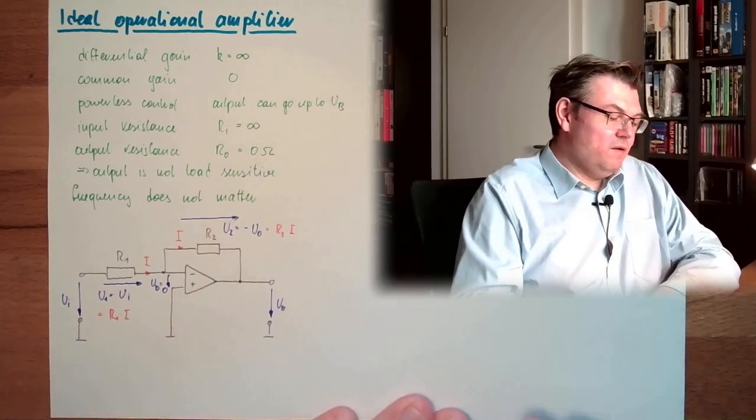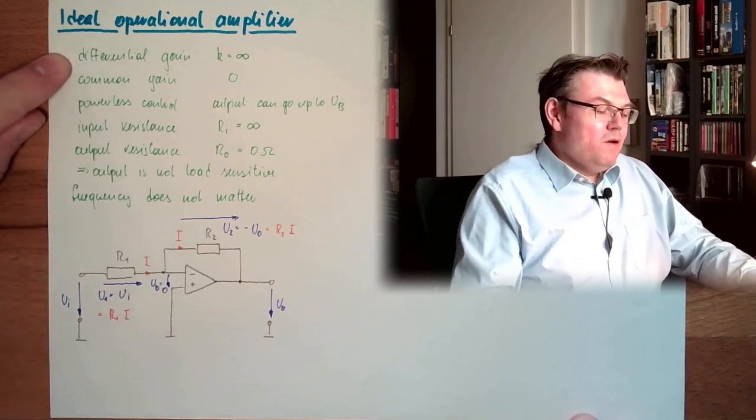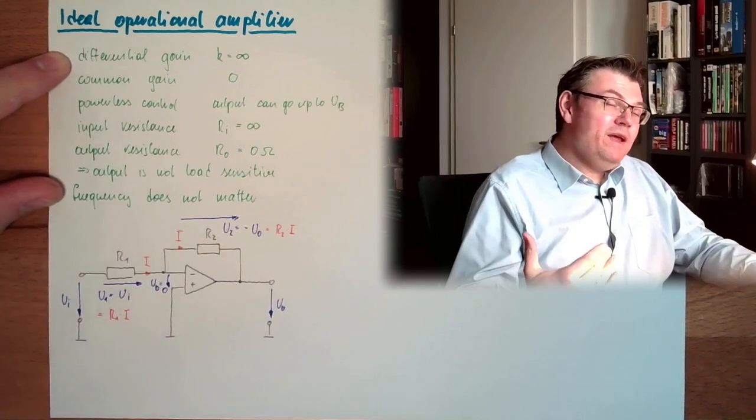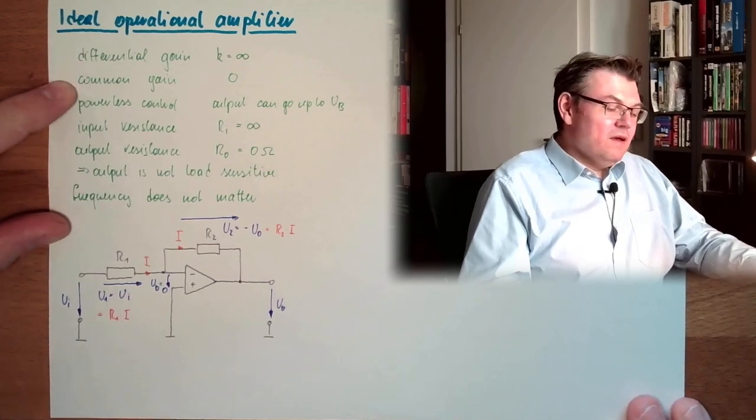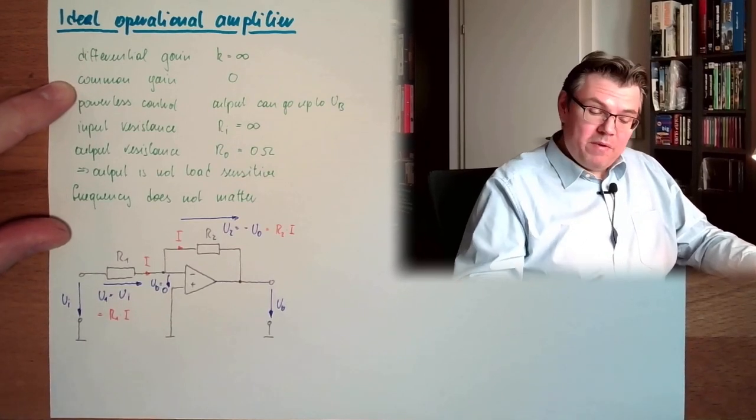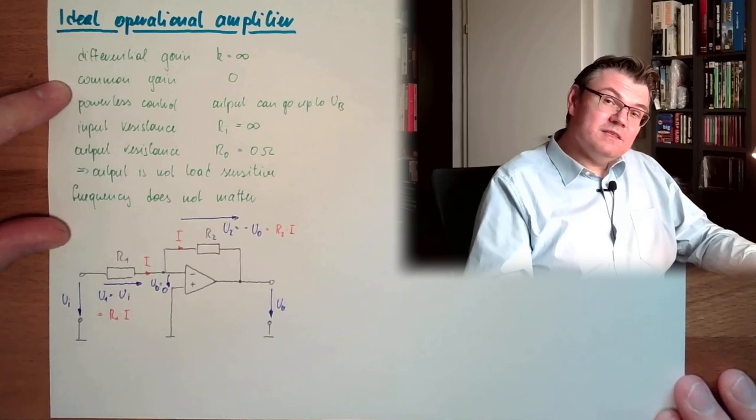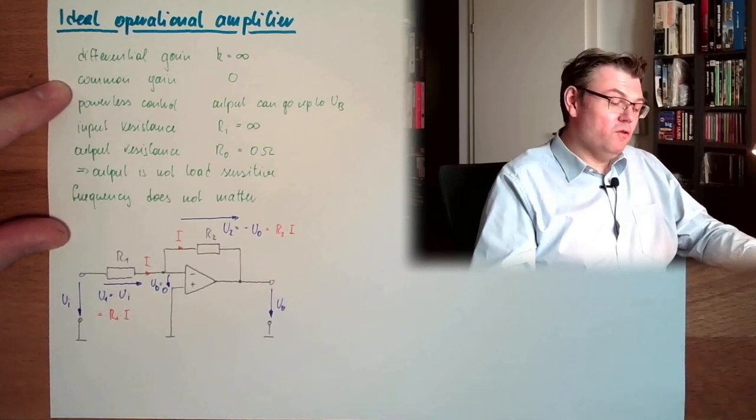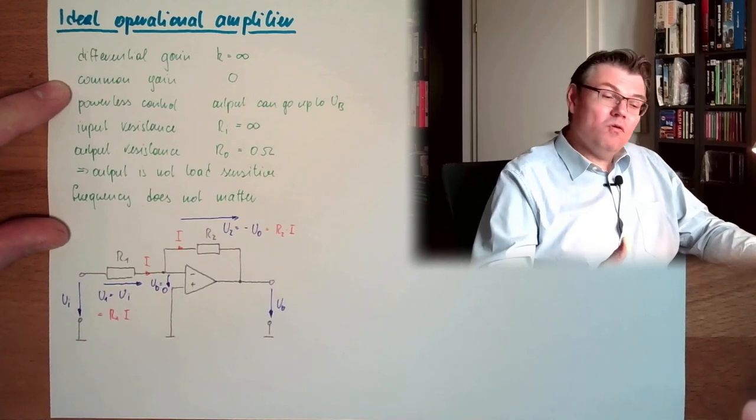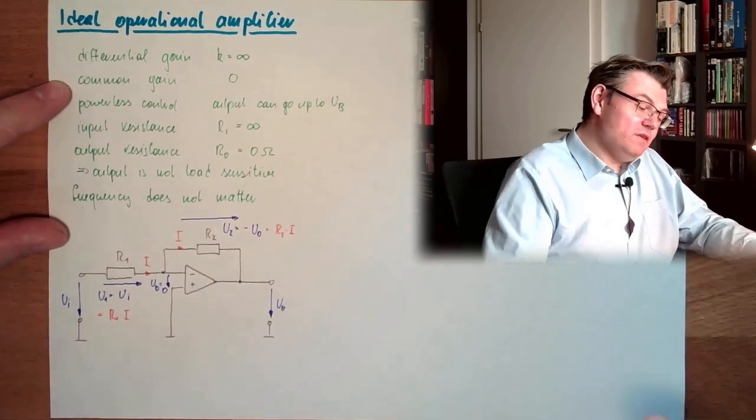Frequency does not matter. Well, here we usually have, at a real amplifier, we have usually very high gain factors. Here, common mode, I already mentioned, common mode rejection. This is part of the datasheet. You can look into how it's not zero, it's compared relatively slow.